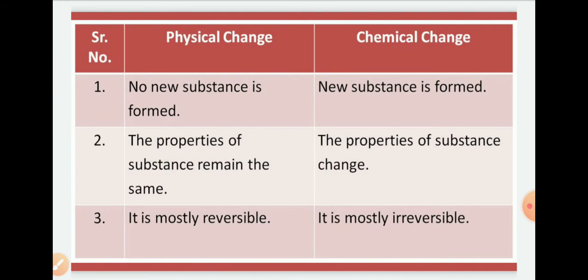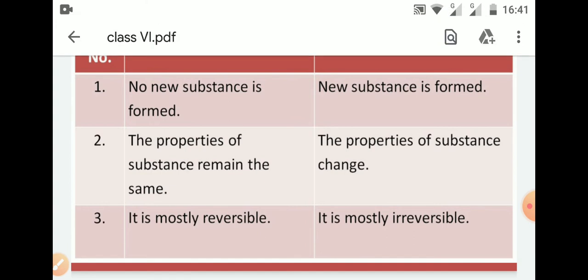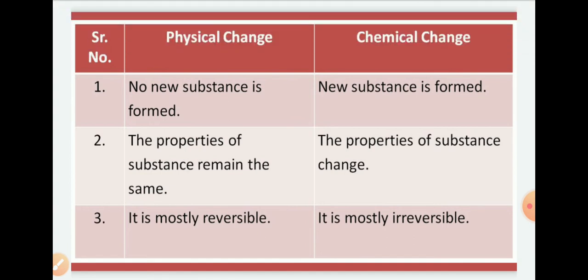Physical change में उस substance की properties कभी भी नहीं बदलती. लेकिन chemical change ऐसा change है जिसमें completely किसी भी substance की properties change हो जाती हैं — जैसे कि किसी में light produce हुई, किसी में heat produce हुई, किसी में sound produce हुई. Different चीजों में different responses मिलते हैं, और कभी भी हमारा original product वापस नहीं आता.